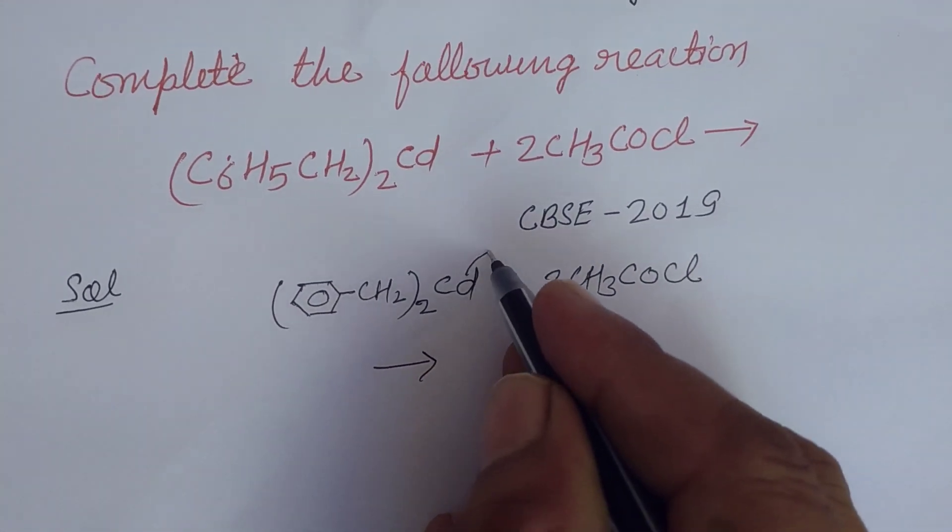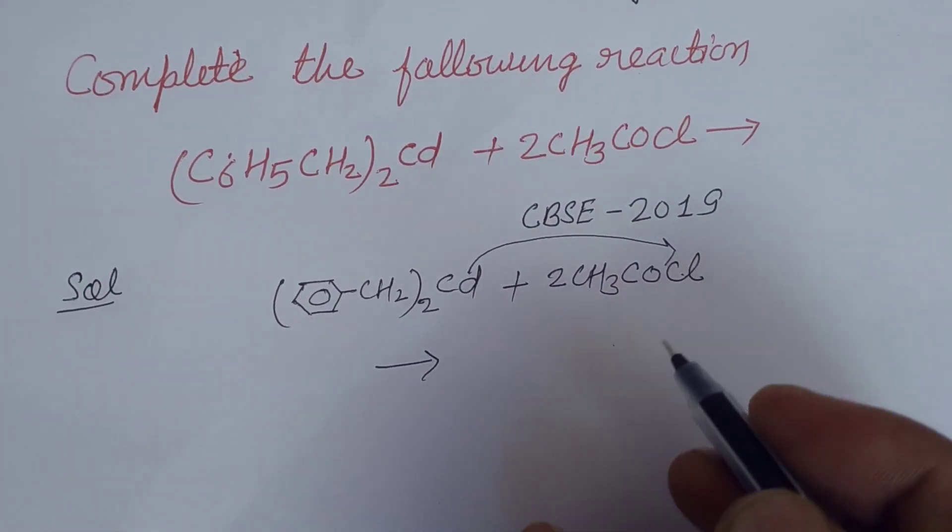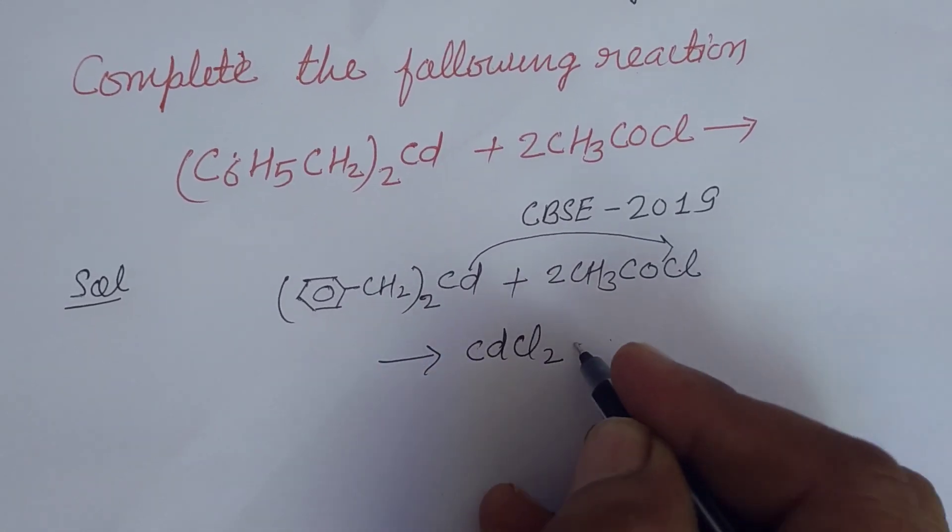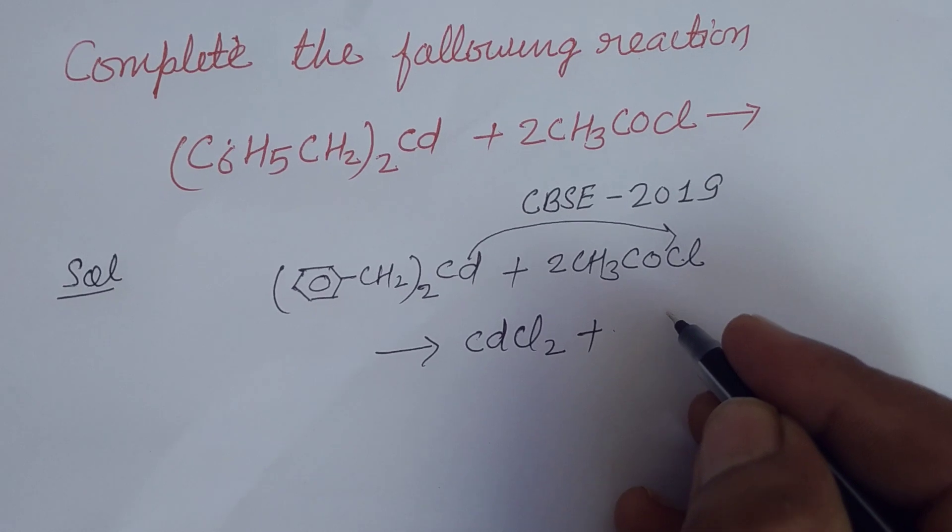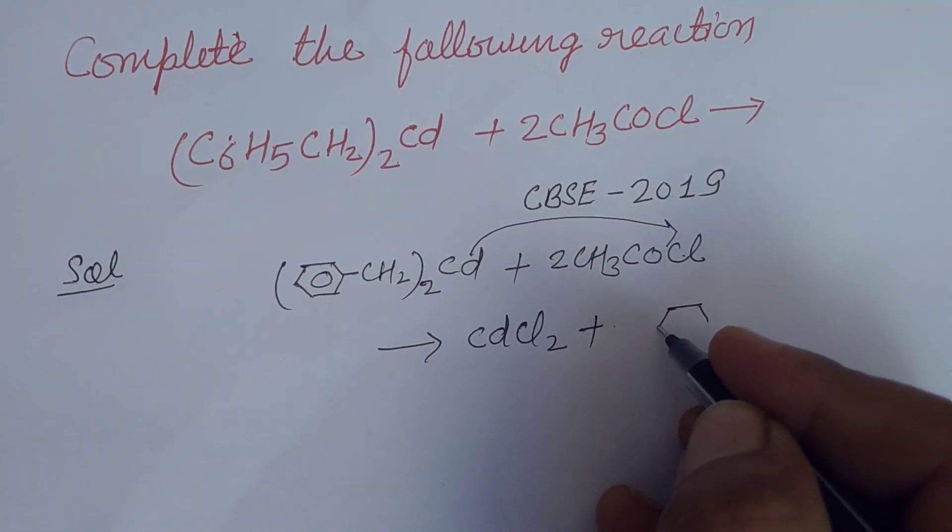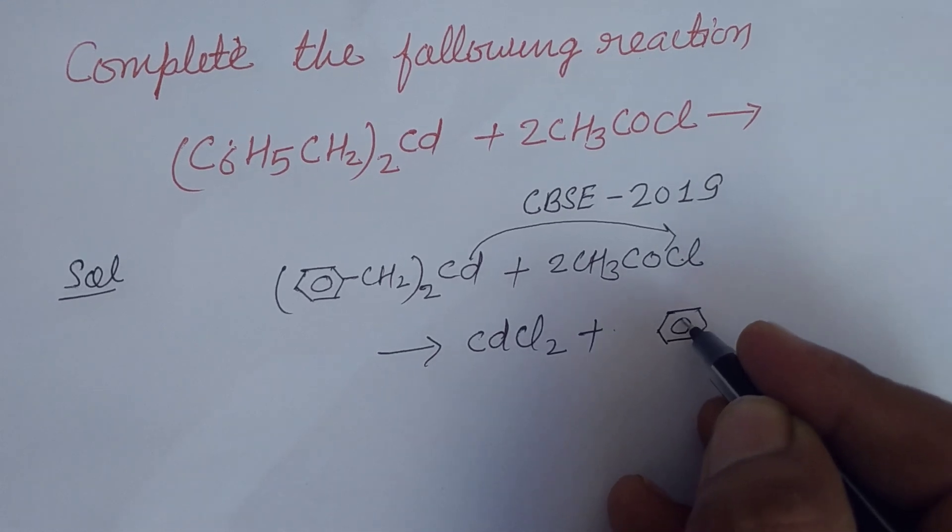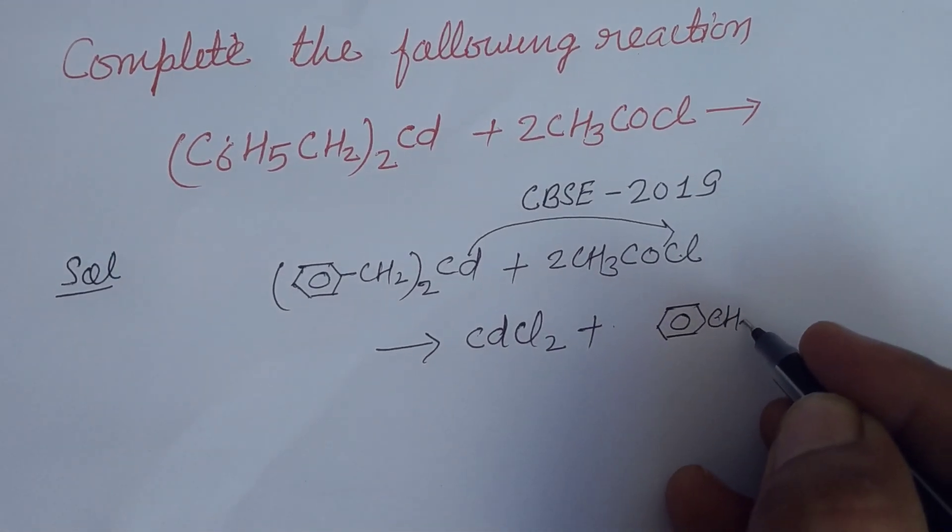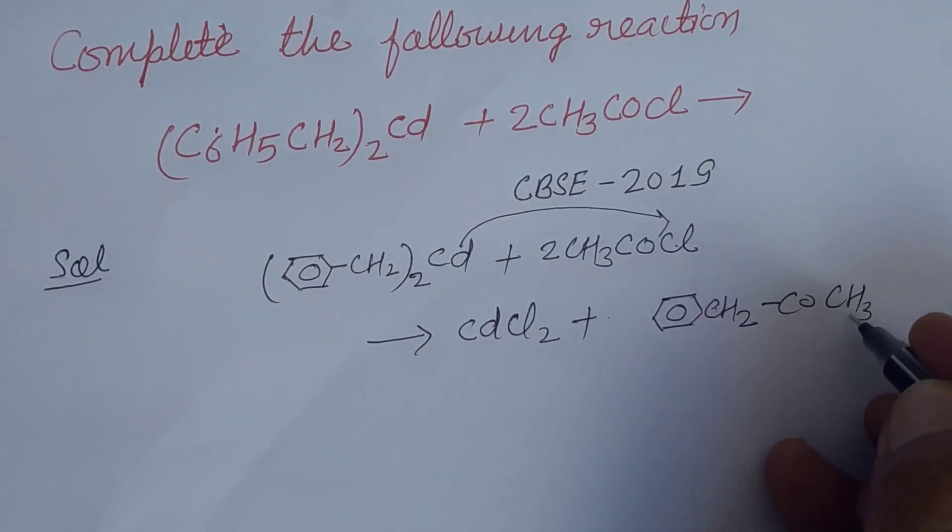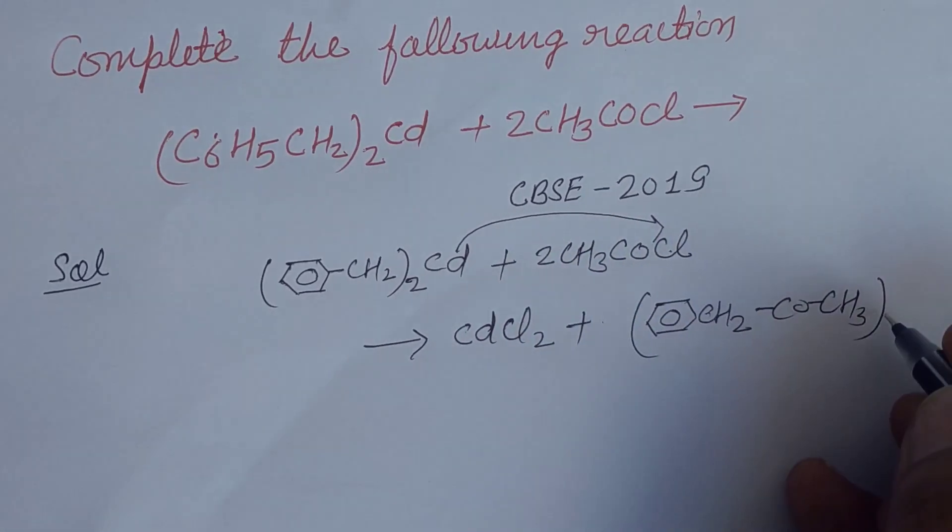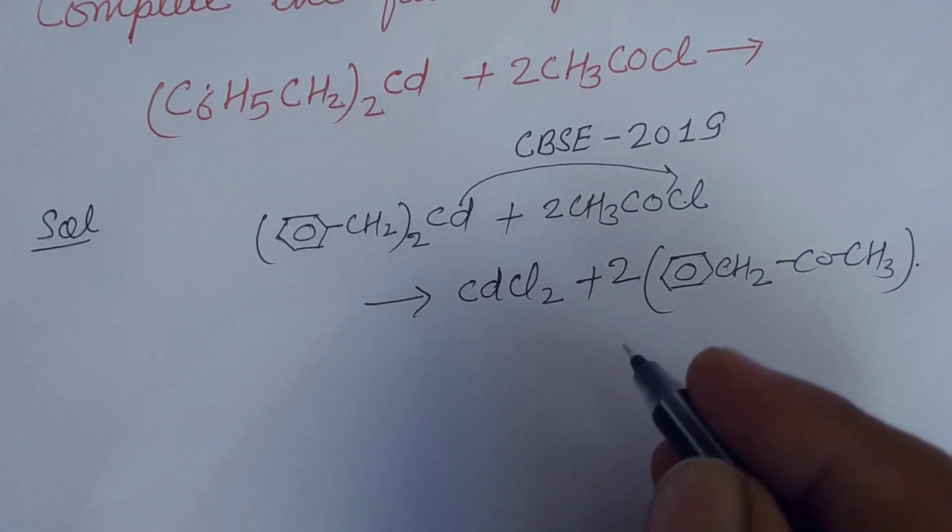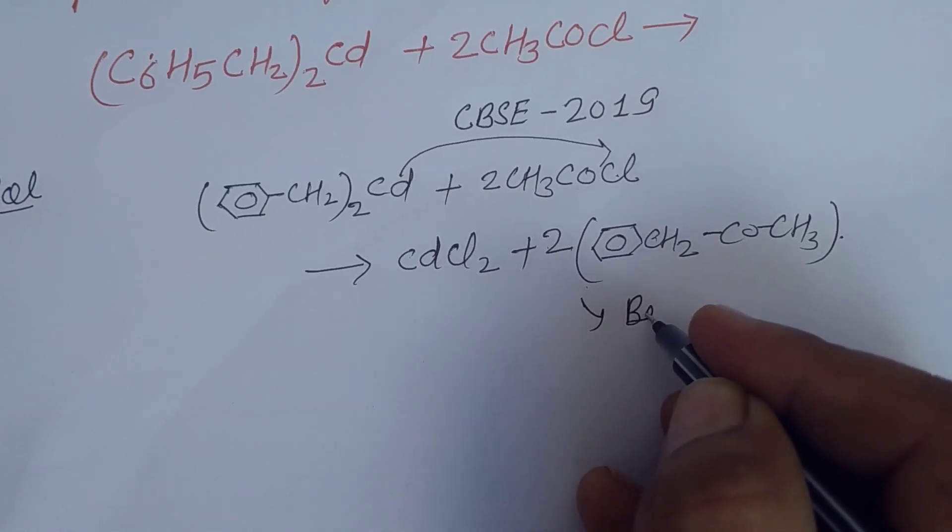Here you know that cadmium reacts with benzene CH2 so it forms CDCl2. Now we got the next product which is CH2 Cu CH3 whole twice, okay this is known as benzyl.